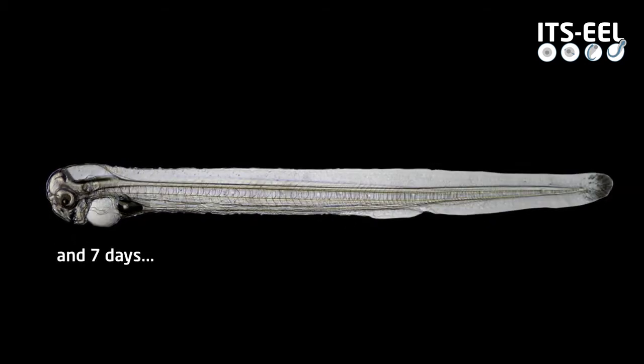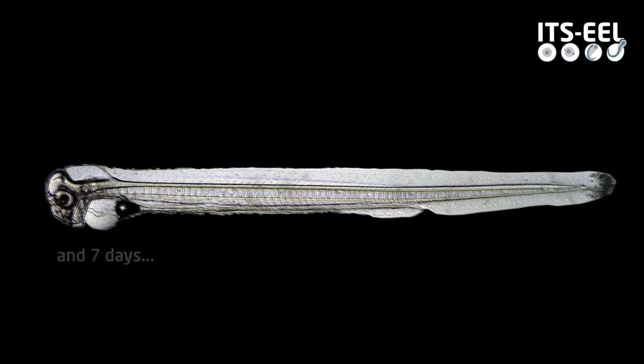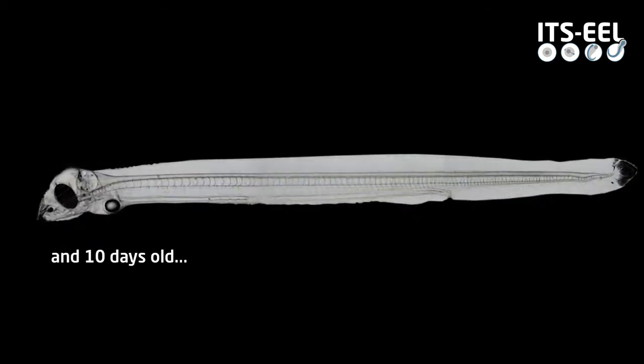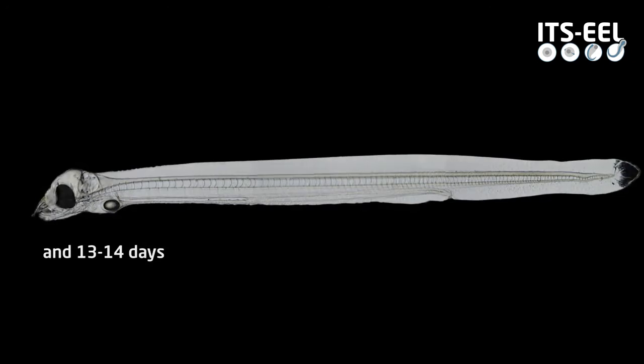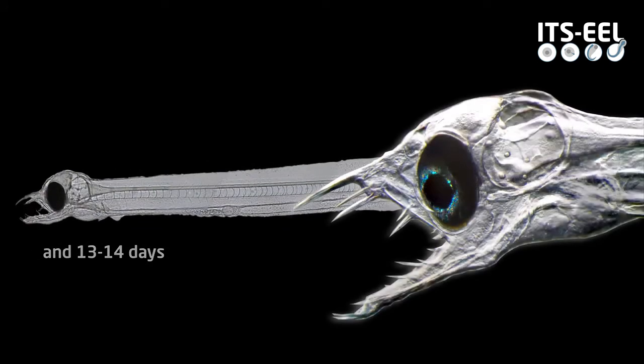During this period, the body and organ develop, and the larvae change appearance. They develop some distinct features, such as protruding teeth and large eyes, and this is all preparing them to start feeding on their own.